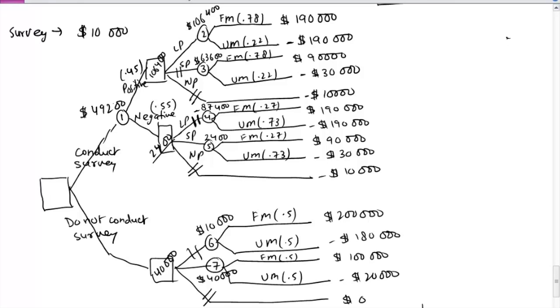So now the competition is between these two numbers, $49,200 and $40,000. So obviously this is smaller, so we strike out this. And we are left with $49,200. So that is the final answer.